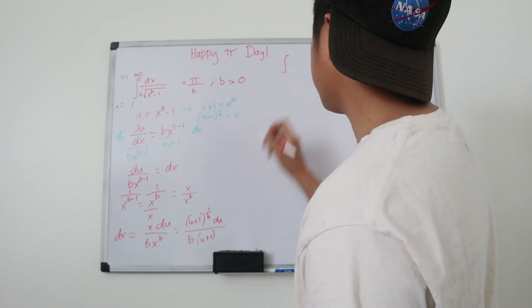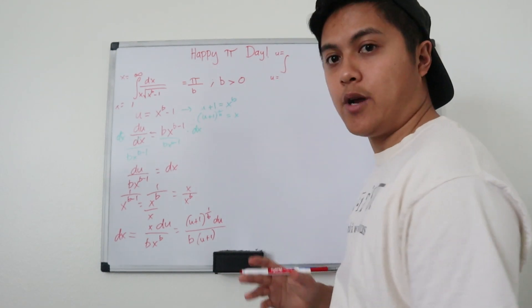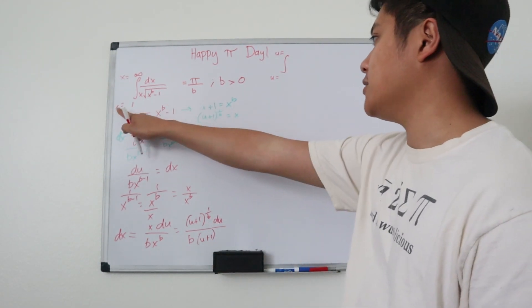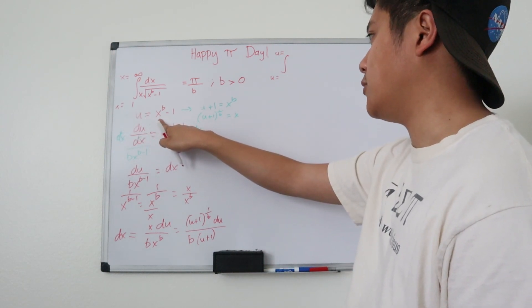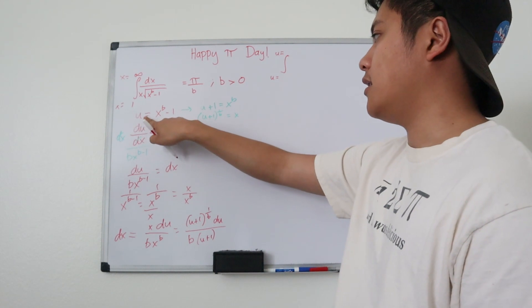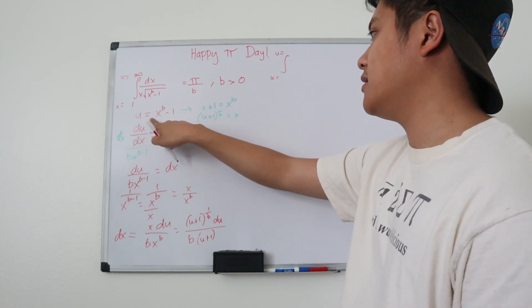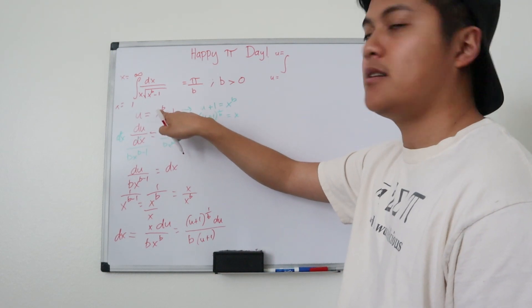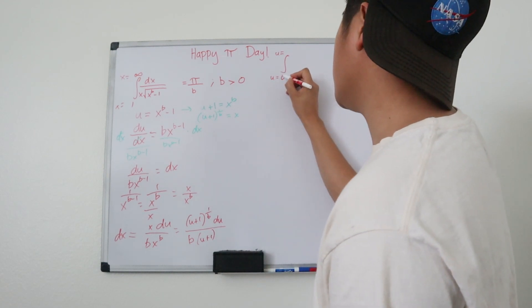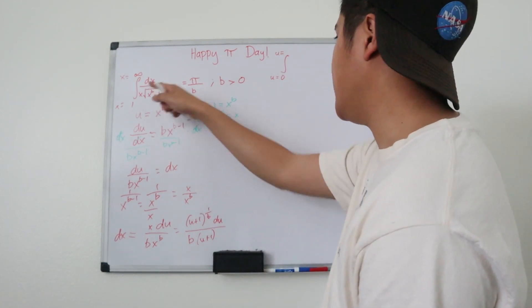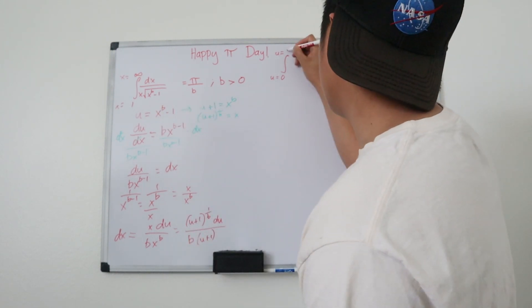To switch to an integral of u, we need to create new bounds. We look at the bounds of x and use u equals x to the b minus 1 to find the corresponding u values. When x equals 1, u equals 1 to the b minus 1, which is 0. When x goes to infinity, u equals infinity to the b minus 1, which is still infinity.